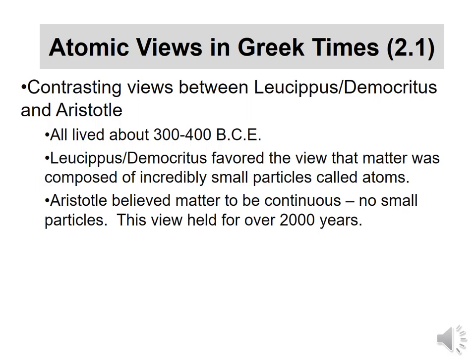Leucippus and Democritus favored the view that matter was made of incredibly small particles called atoms, whereas Aristotle believed matter was continuous — with no small particles. It's like standing back from a sandy beach: from a distance you can't tell what it's made of, but as you get closer you see individual grains of sand. The view of Leucippus and Democritus is more in tune with reality — get small enough in matter and you'll find it's made of smaller particles, just like a beach is made of sand.